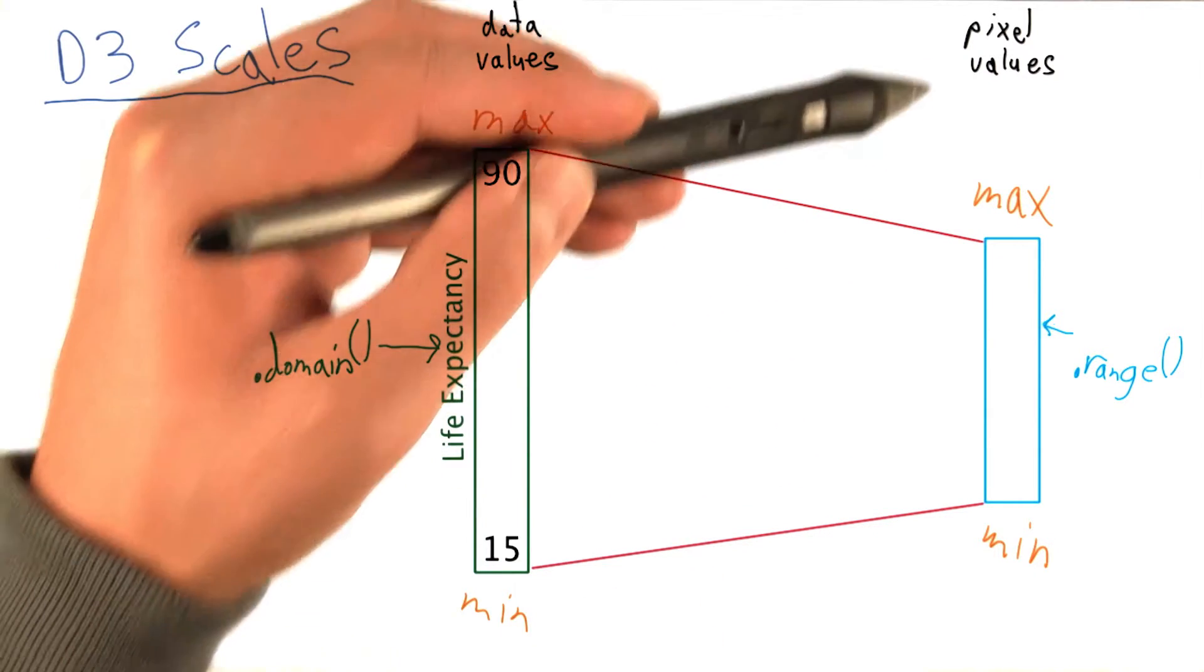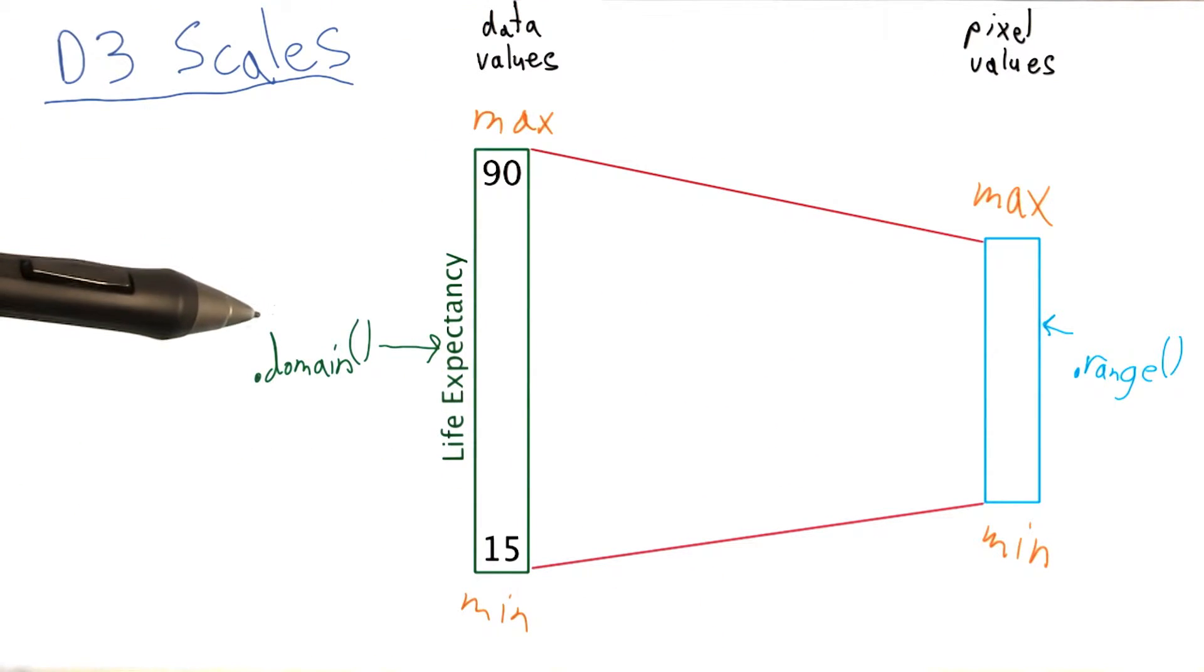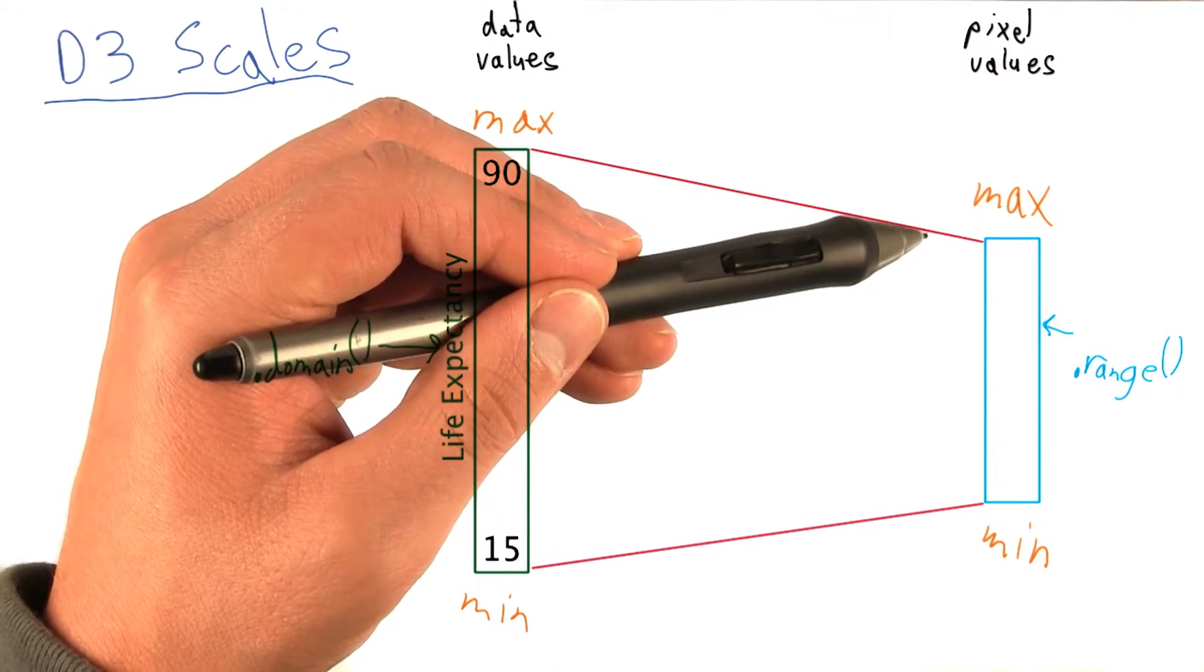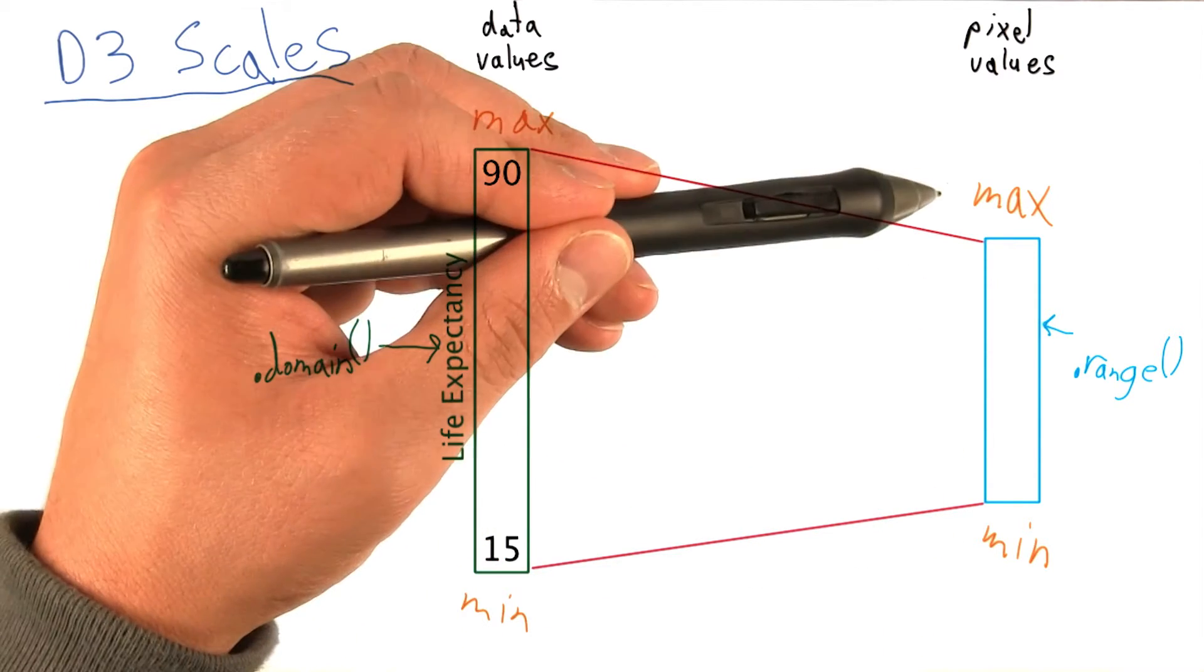And D3 refers to the pixel values you want to map the domain to, the range, also represented by a minimum and a maximum value.